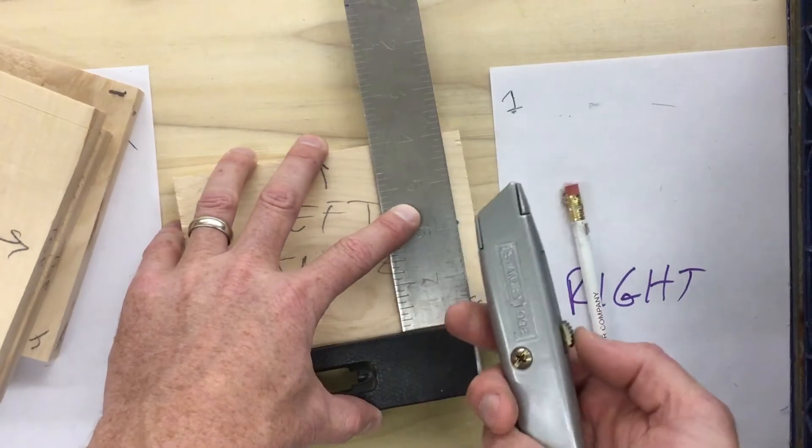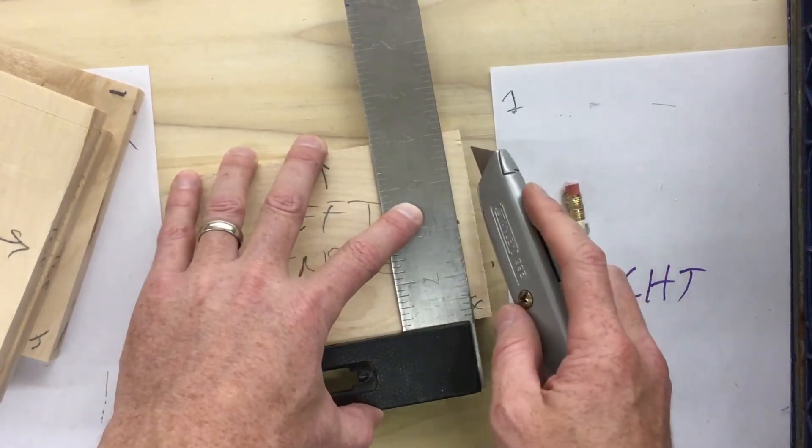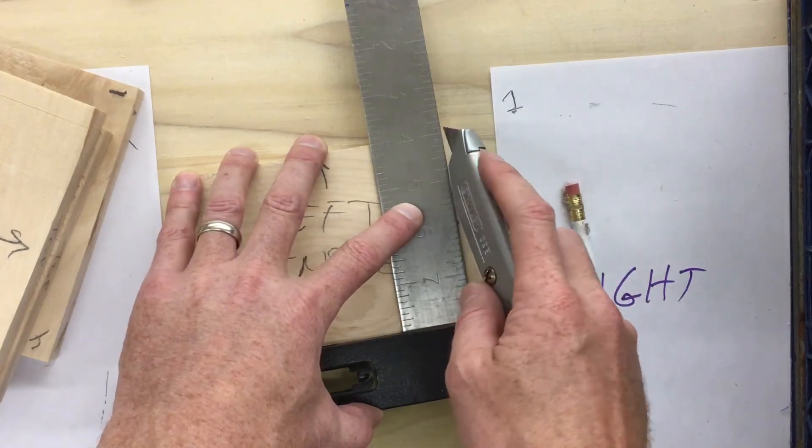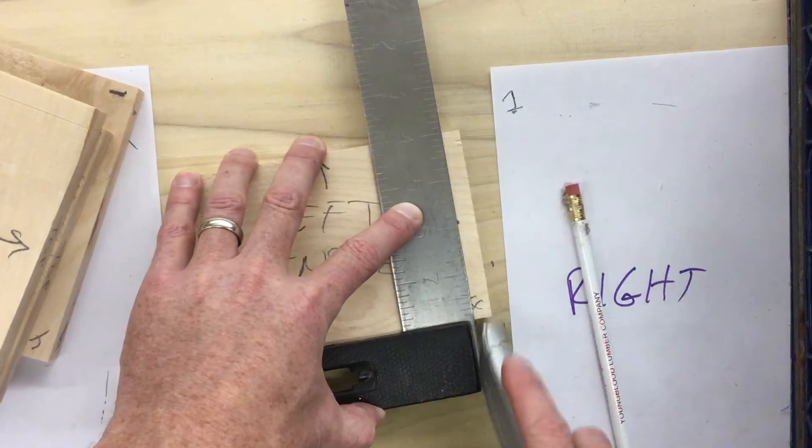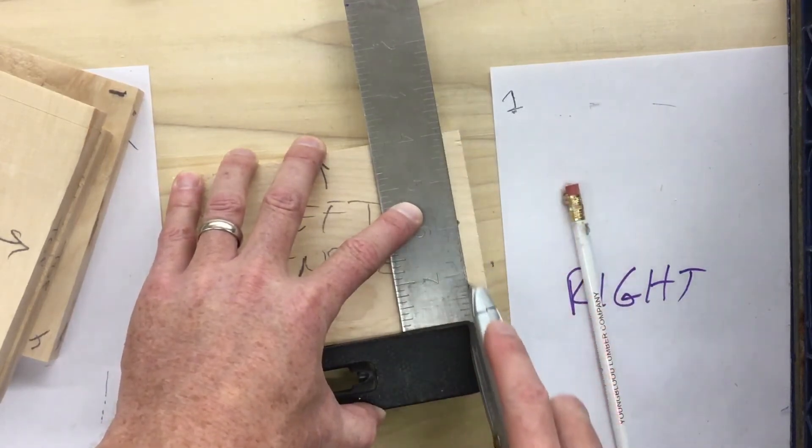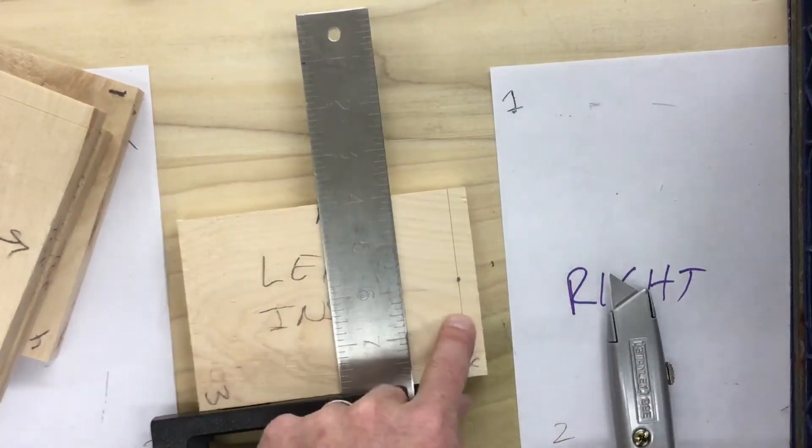Now I'm going to very carefully get my blade out of my utility knife. Notice I have my finger here so I can press. I'm going to make a cut right along this line here. I'm going to do it a couple of times so it gets a little bit deep. Now you can see I have that mark cut.